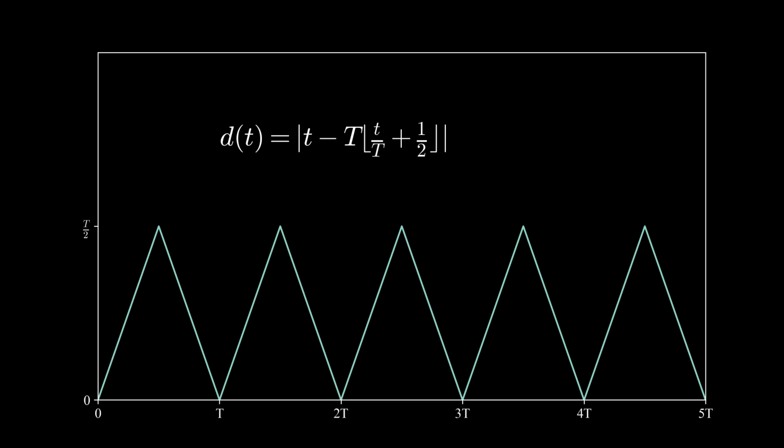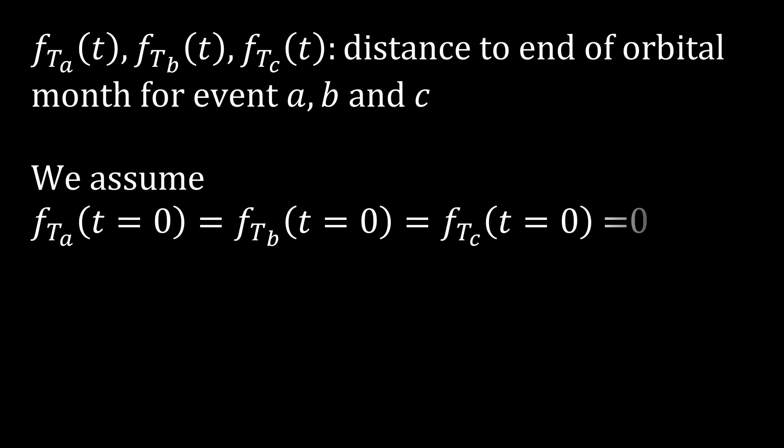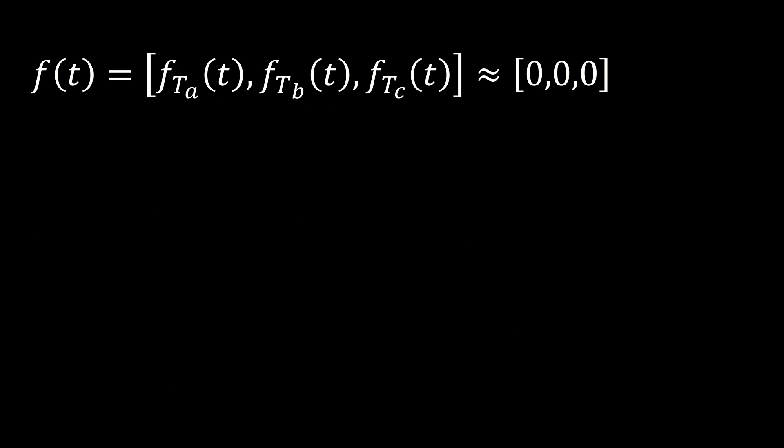Now that we have the general distance function for any orbital period T, we define it for the synodic month, the anomalistic month, and the draconic month — calling these f_ta(t), f_tb(t), and f_tc(t). At t equals zero, we assume we are at the end of an orbital month and want to know when next we'll be close to the end of all three orbital months simultaneously. A similar eclipse will occur at time t when f_ta(t), f_tb(t), and f_tc(t) are all close to zero at the same time.